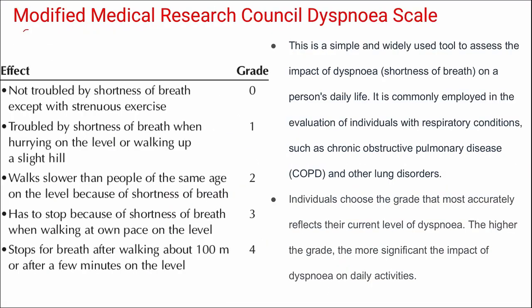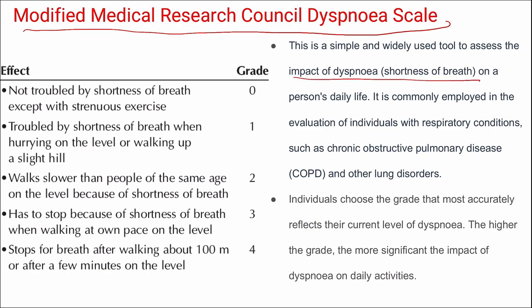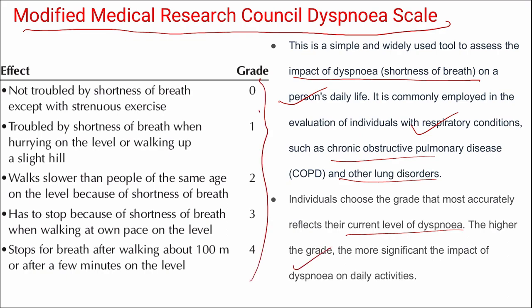Next is the Modified Medical Research Council (MMRC) Dyspnea Scale — a simple and widely used tool to assess the impact of dyspnea on a person's daily life, commonly used in individuals with respiratory conditions such as COPD and other lung disorders. It most accurately reflects the current level of dyspnea. It has 5 grades (0–4), with higher grades indicating more significant impact of dyspnea on daily activities.